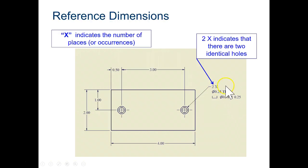When you see the X, that means you have two features that are identical. So this is 2X. So it says there's two. If it said 4X, you would have four that were identical.